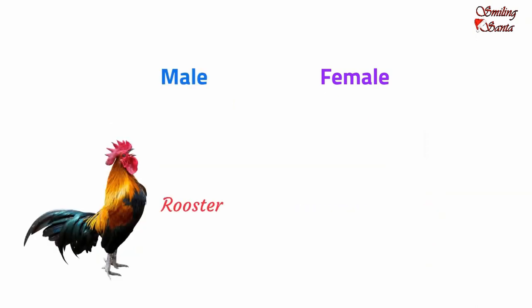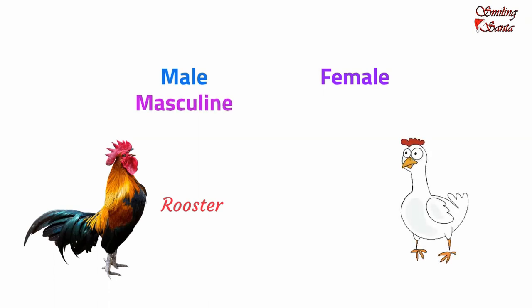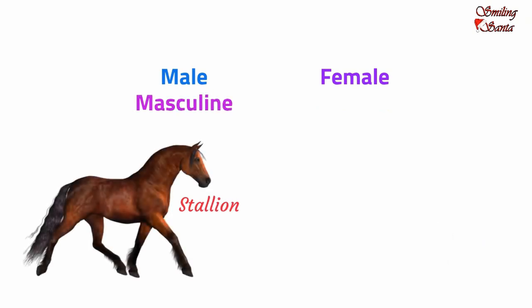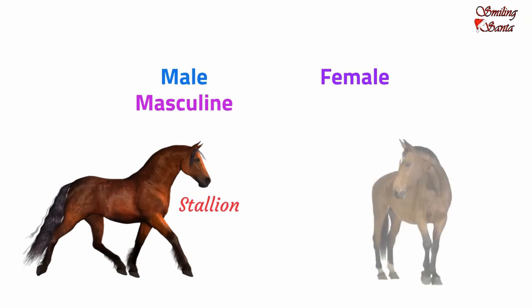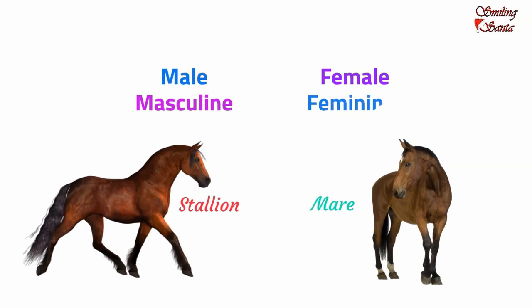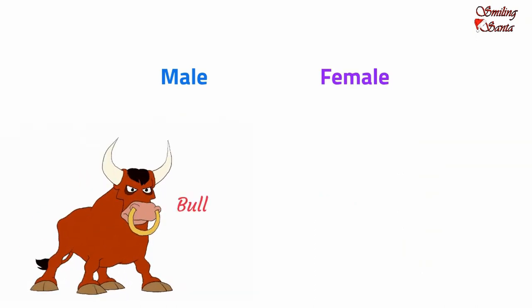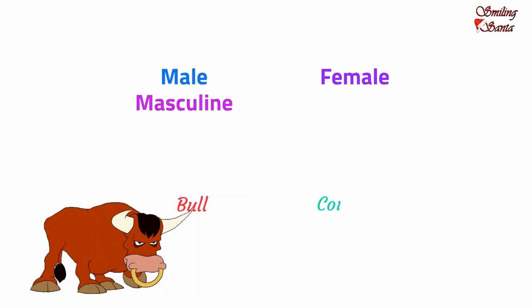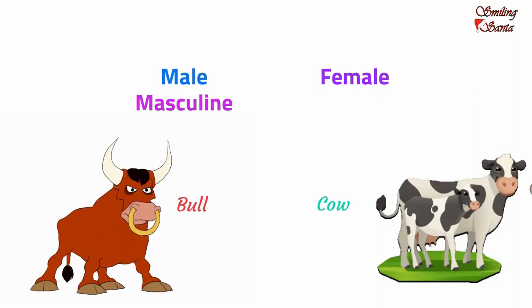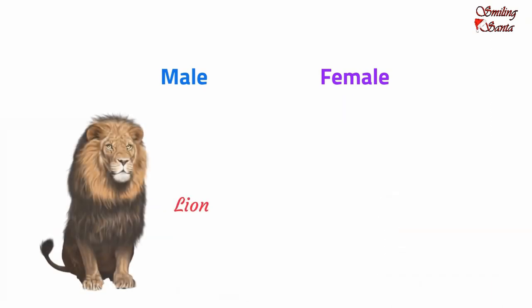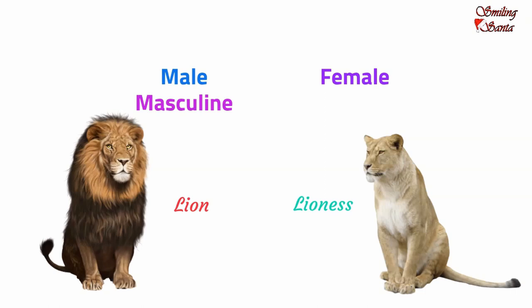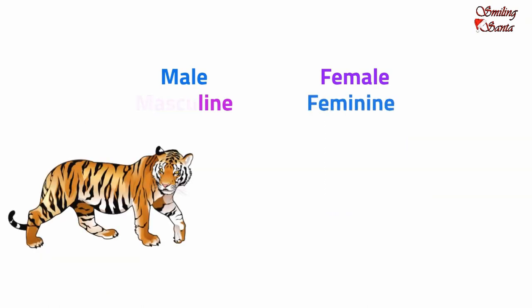Rooster is a male bird and hence it is of the masculine gender, whereas the hen is a female bird and belongs to the feminine gender. Stallion belongs to the masculine gender — by stallion, we refer to a male horse. Mare belongs to the feminine gender. Bull is a male cow, so bull is the masculine gender. Cow is a female and belongs to the feminine gender. Lion refers to the male lion, so lion is the masculine gender. Lioness is a female lion, so it refers to the feminine gender.